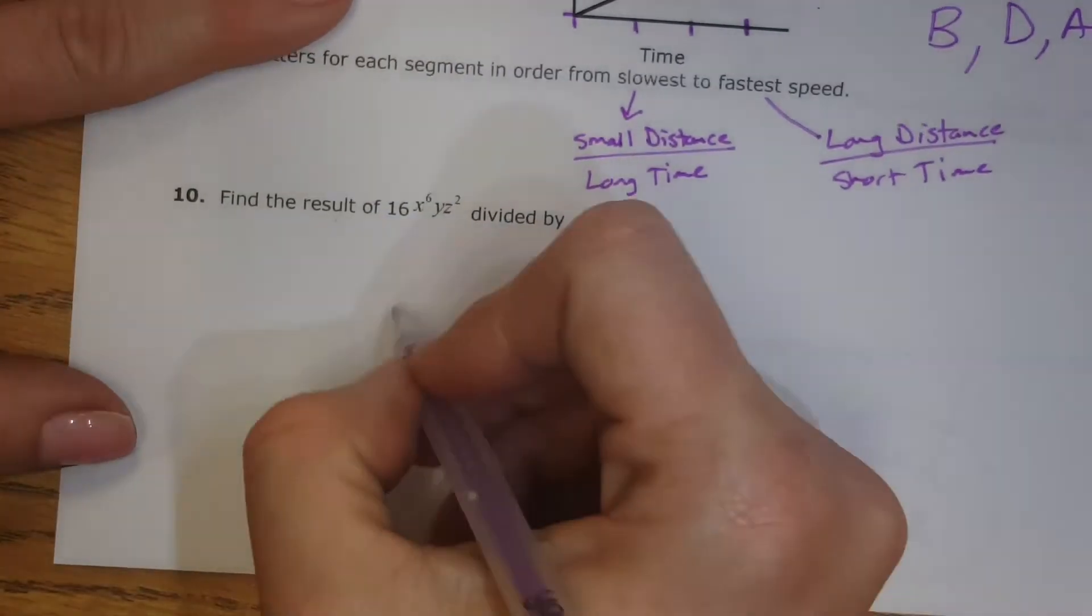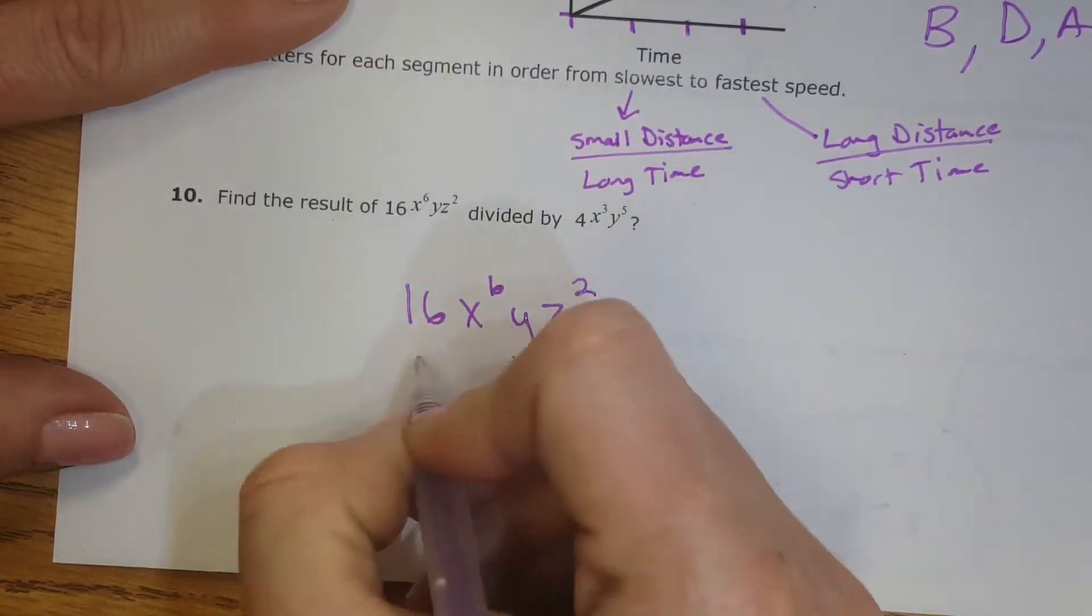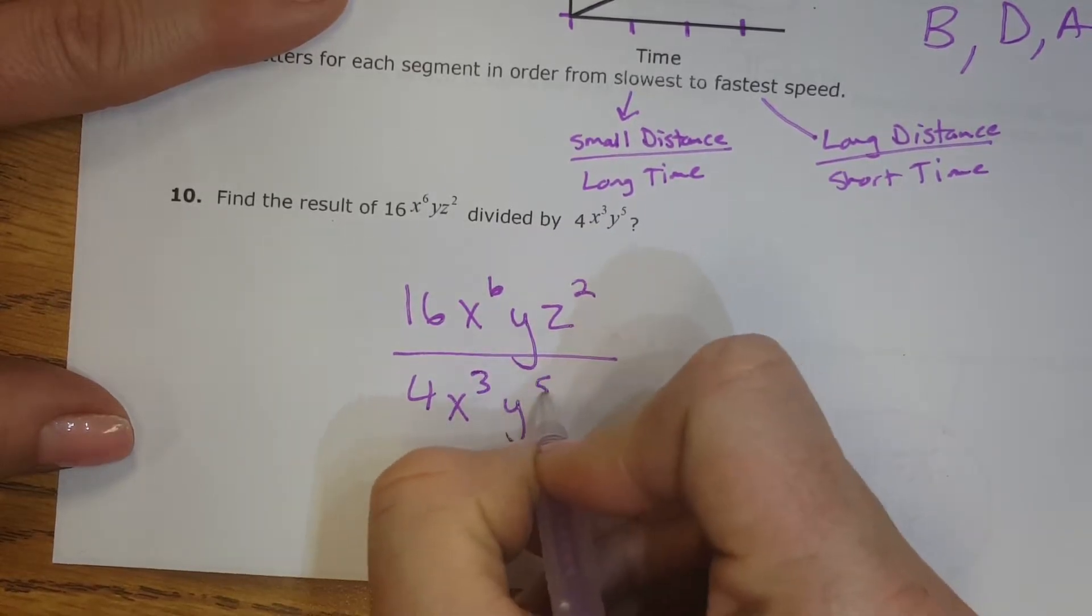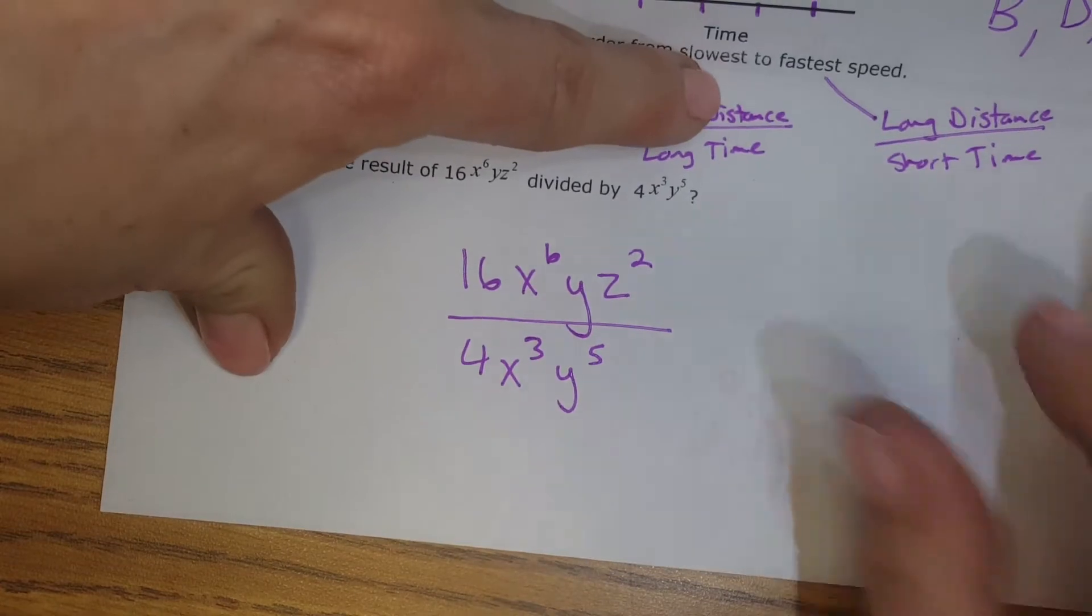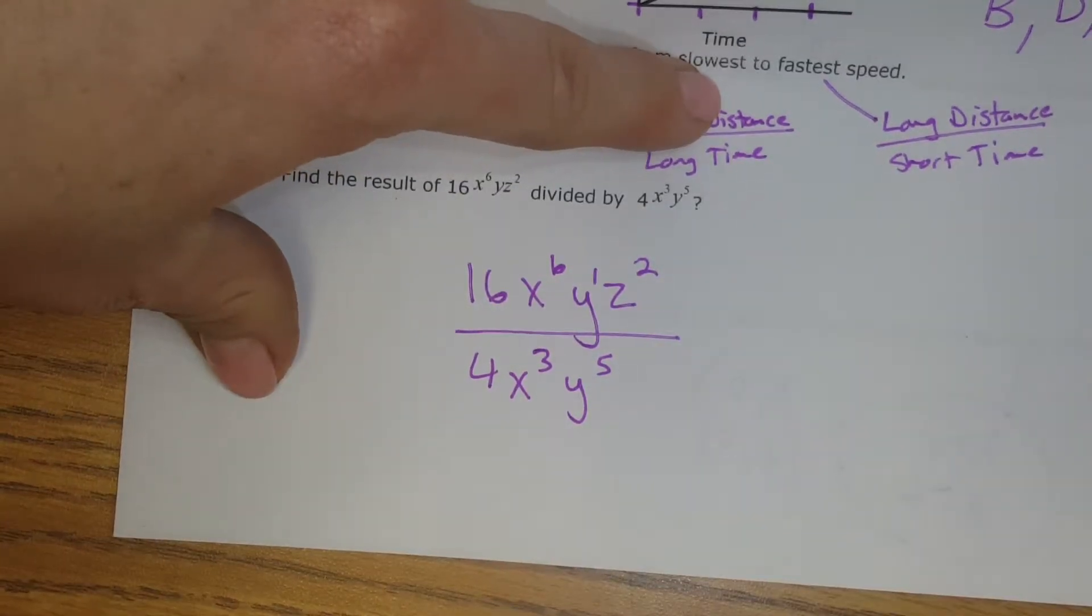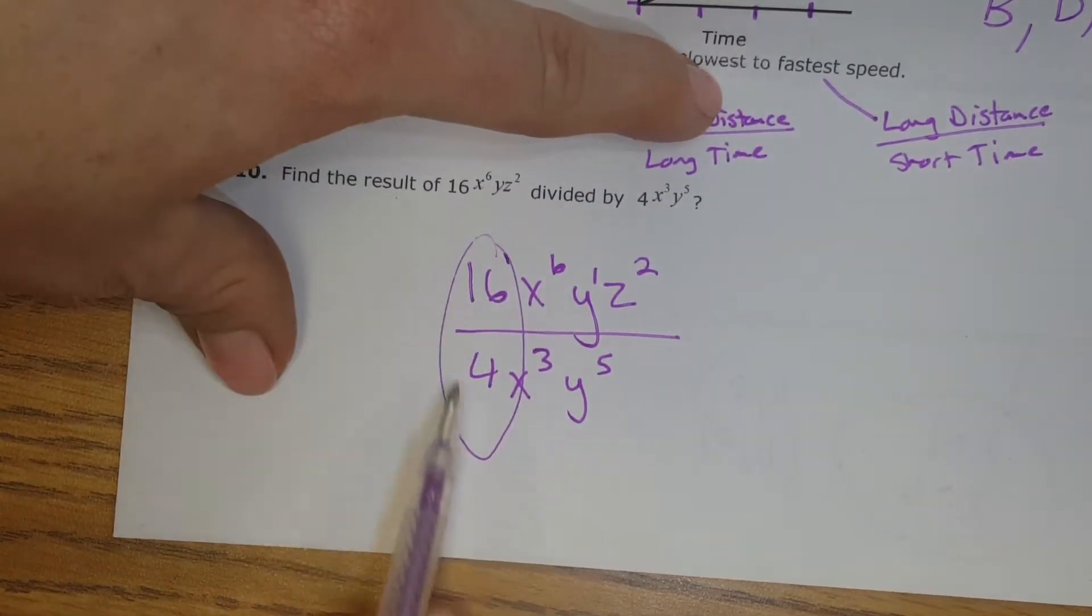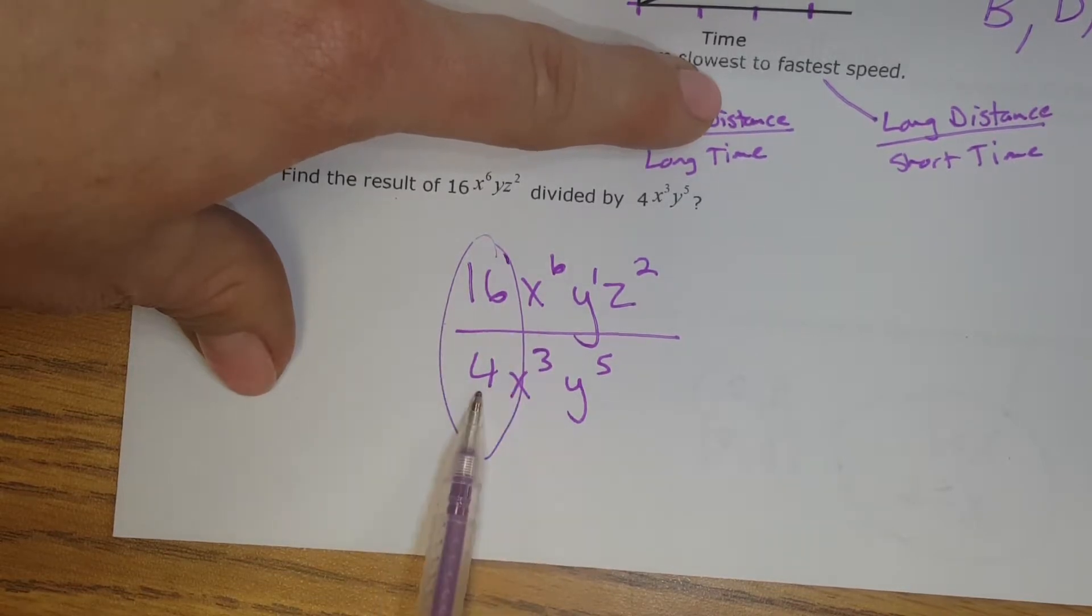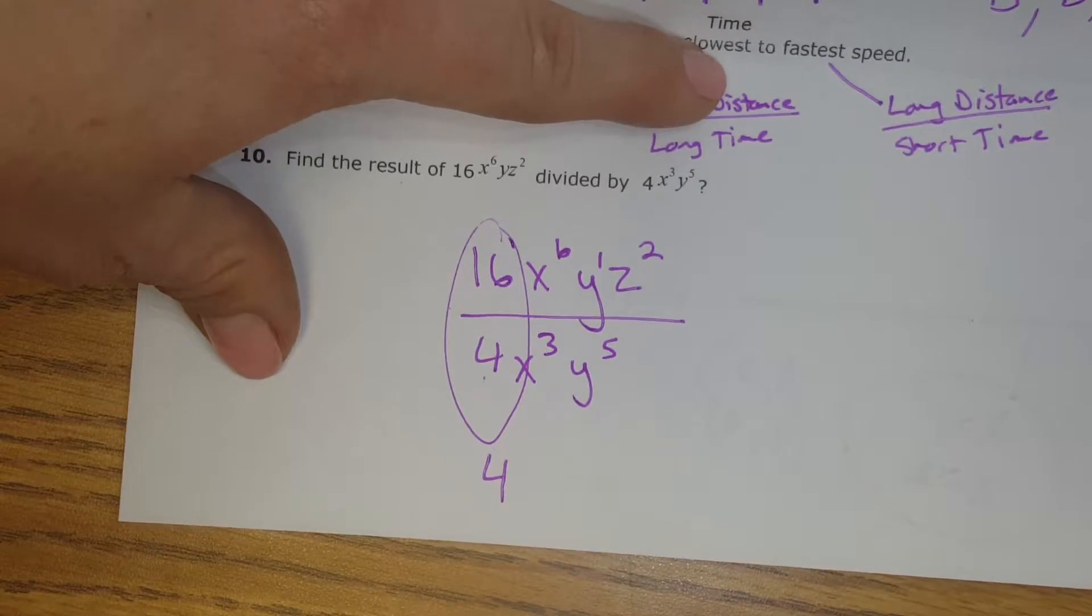All right, number 10, find the result of 16x to the 6th, y, z squared, divided by 4x to the 3rd, y to the 5th. First thing I'm going to do is I see a letter with no exponent on it, so I'm going to put a 1 here to hold that place so I don't get confused. Then I'm going to remind myself that these regular integers, these regular numbers, just follow regular math rules. So 16 over 4 means 16 divided by 4, which is 4. So I just divide those regular.